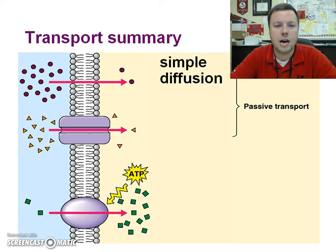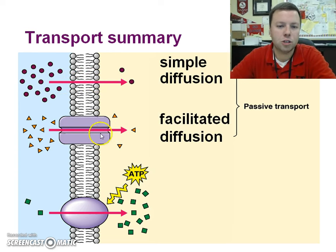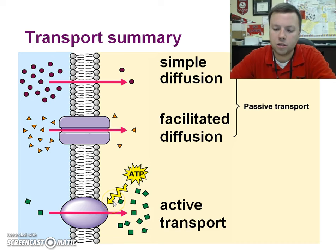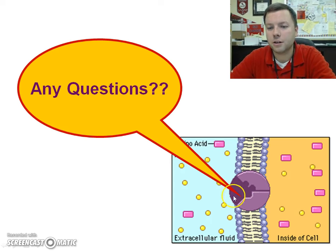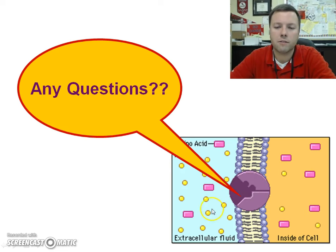Summary: simple diffusion — things go from high to low concentration directly through the membrane. Facilitated diffusion — also high to low, but things need a channel protein to get through; both are passive transport. Active transport — from low to high concentration, requires energy in the form of ATP. What you see here is a protein pump: it requires ATP, things come in, a conformational change occurs, and they pass through to the other side.